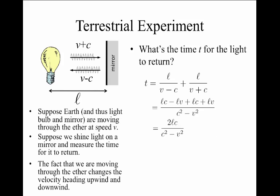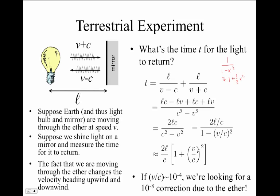Or, finding a common denominator, this is 2LC over C squared minus V squared, or 2L over C divided by 1 minus the quantity V over C squared. Using the familiar formula with 1 minus x squared, the expression is approximately equal to 2L over C times the quantity 1 plus the square of V over C. Since V over C is approximately 10 to the minus 4, we are looking for a 10 to the minus 8 correction in this time due to the ether. That is a very challenging measurement to make.